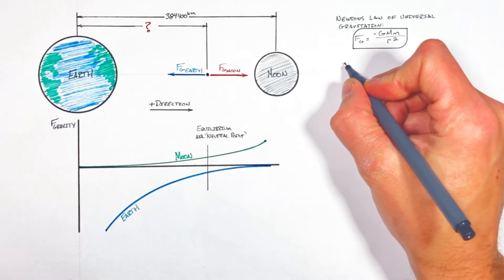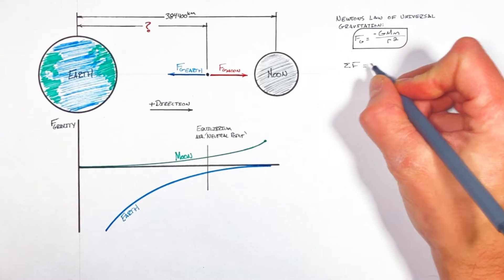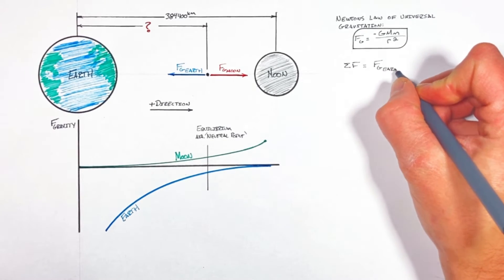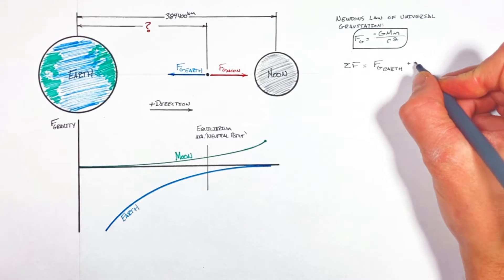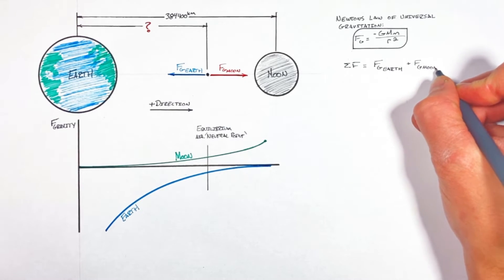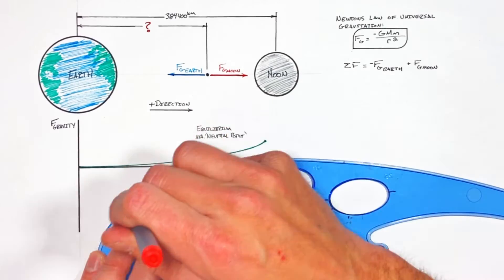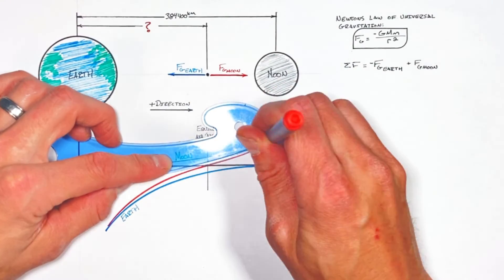You see, the net force on our spaceship at any given point is the force by gravity from the Earth plus the force by gravity from the Moon, but realize they're in opposite directions so they're competing with each other. And if we're to graph that net force it looks something like this.